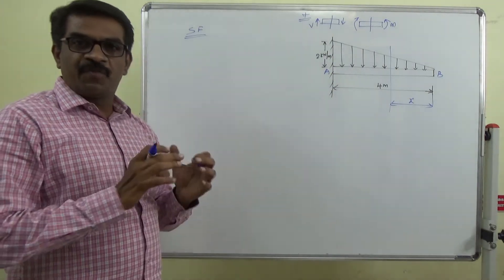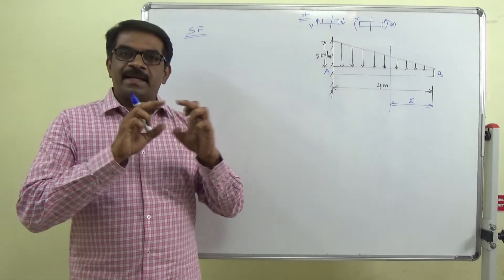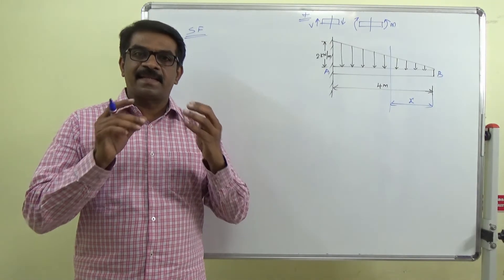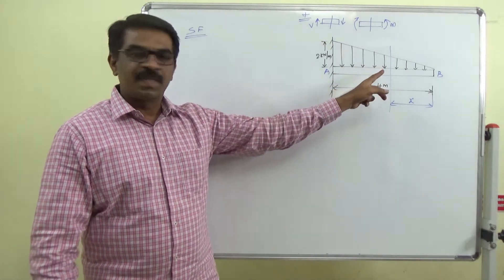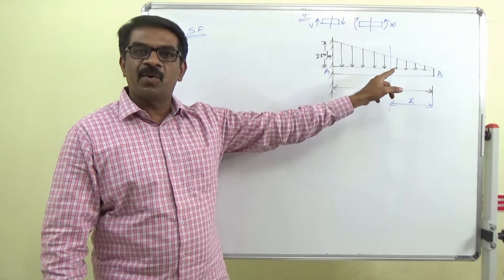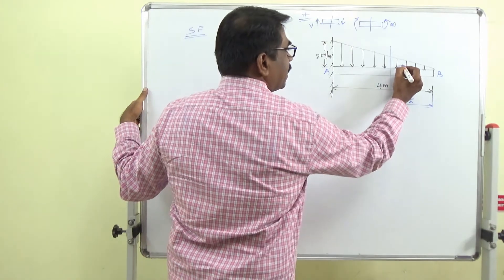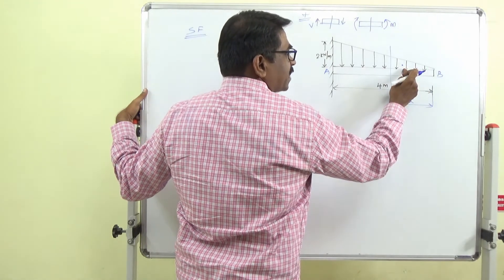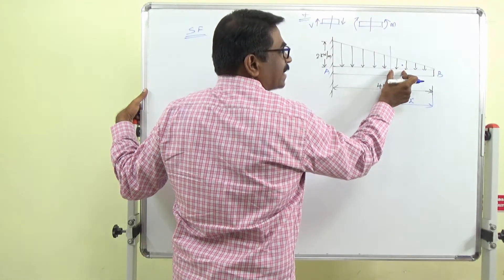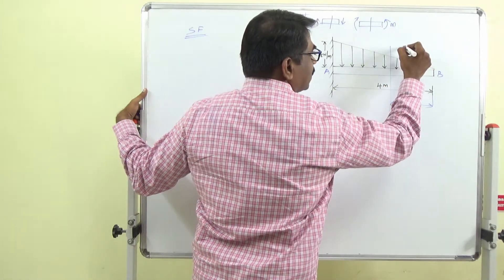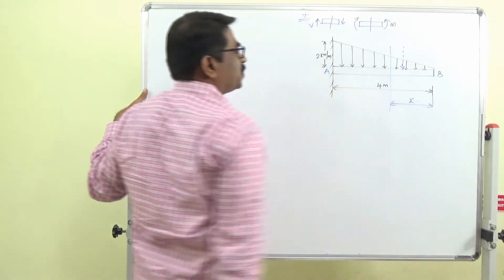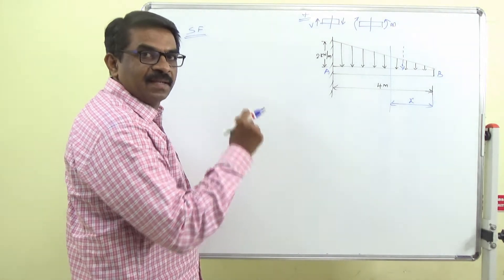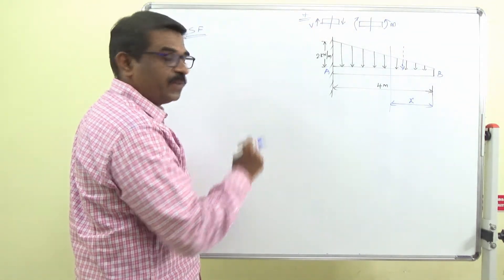For a uniformly varying load, the load is converted into a point load. For a uniformly distributed load you use a rectangle, but here the load is triangular. The point load acts at the centroid of the triangle — at x/3 from the loaded end and 2x/3 from the free end.